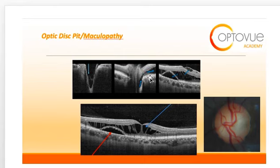Fluid can then move from the outer retinal space to the inner retinal layers, which results in the maculopathy that we described before. I hope that you enjoyed this webinar on optic disc anomalies, and I look forward to seeing you at future webinars.